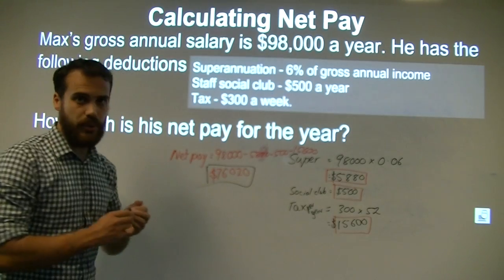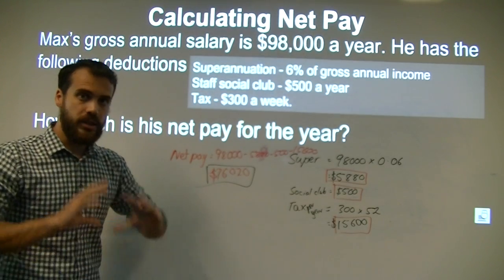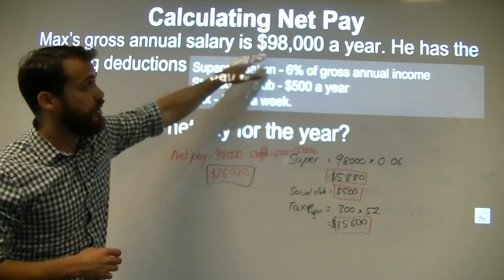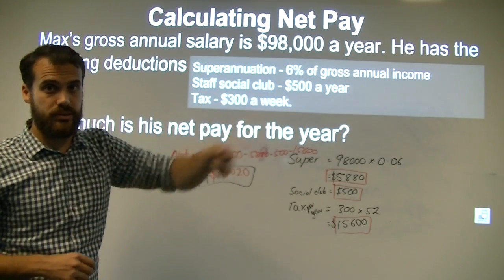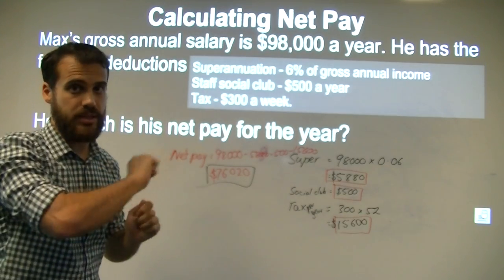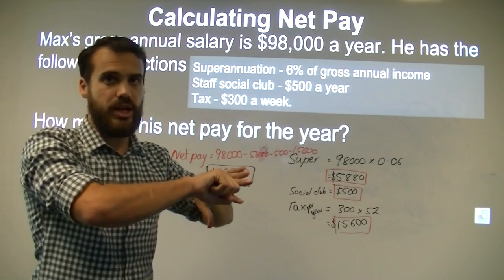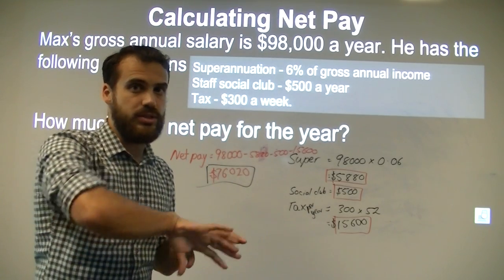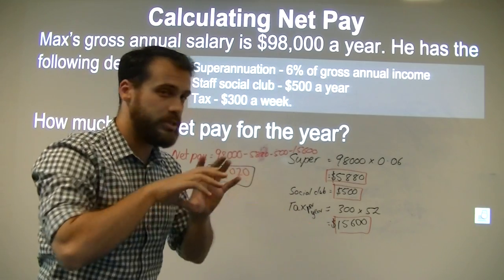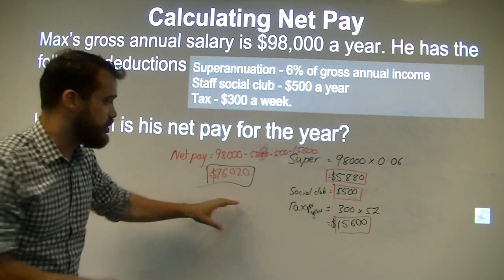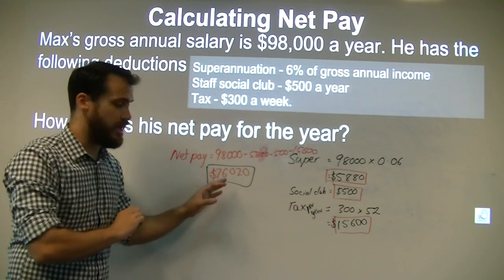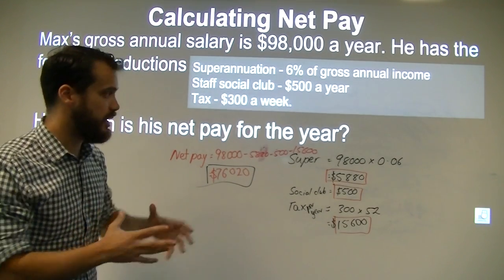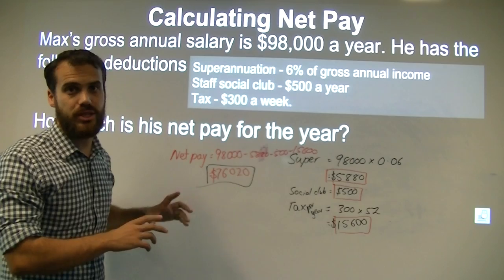Recapping what happened in this question really quickly: the employer — his boss — gave him $98,000 for the year. But before that money made it to his hands, $5,880 went to super, $500 went to the social club, and $15,600 went to the government as tax. What's left over is his net pay, which is $76,020. That's gross and net pay, and how to calculate it in a quite complicated situation.